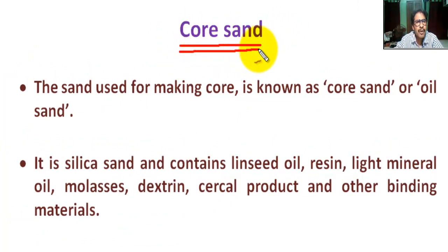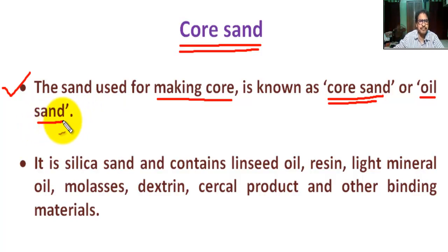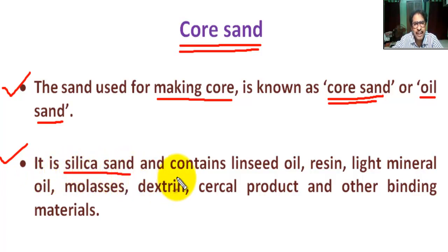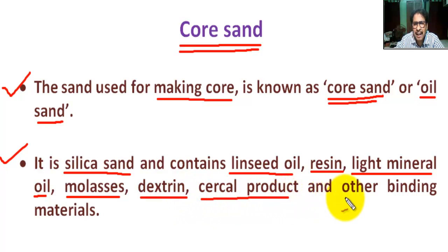Now, what is core sand? The sand used for making a core is known as core sand. It is also called oil sand. It is a silica sand and contains linseed oil, resin, light mineral oil, molasses (from sugarcane), dextrin, charcoal products, and other binding materials.